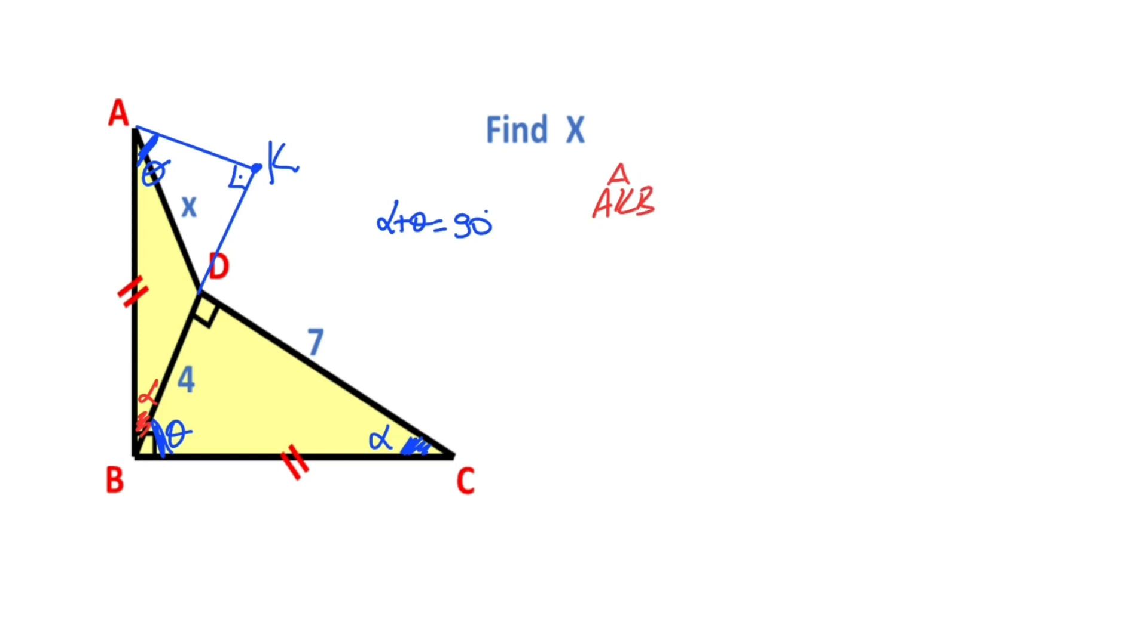So triangle AKB and triangle BDC are congruent. And then if there's a four units opposite side of the alpha, opposite side of the alpha must be equal four units. If there's a seven unit opposite sides of the theta, opposite sides of the theta here must be equal seven units. That means here must be equal three units.